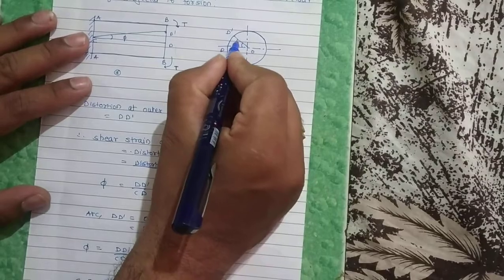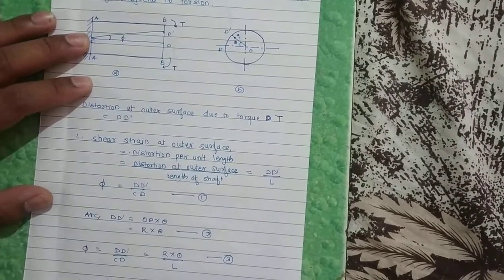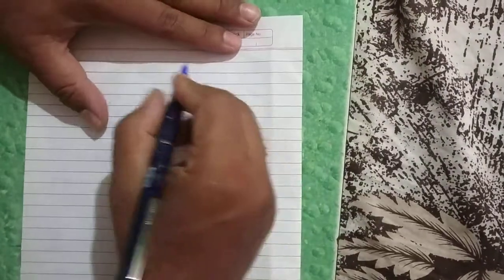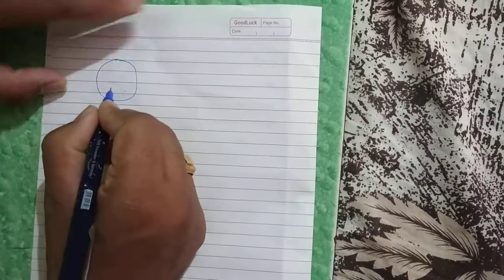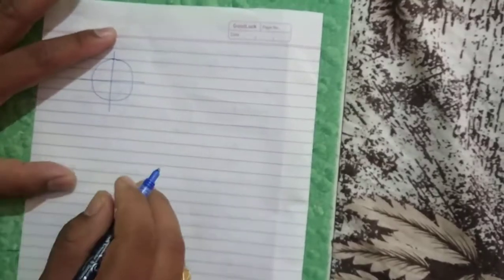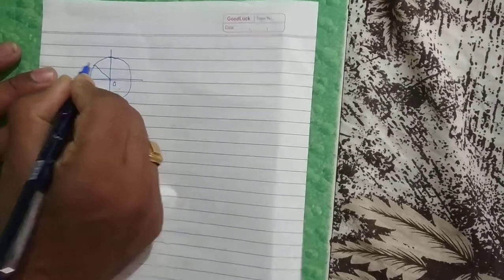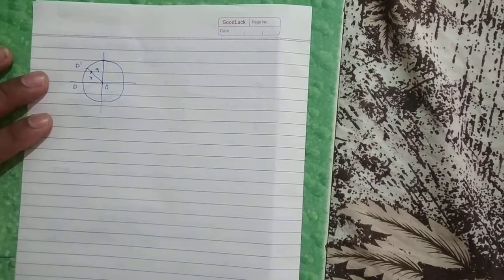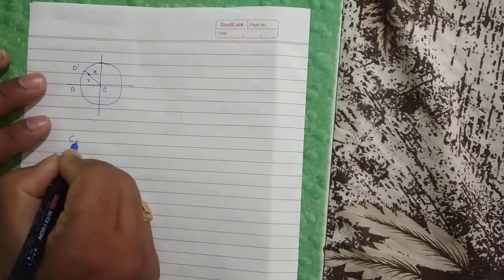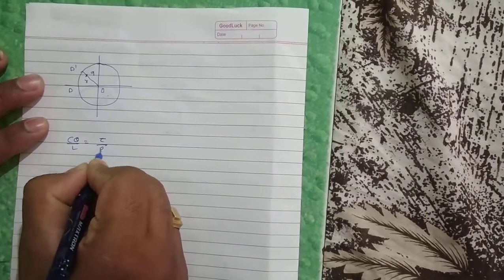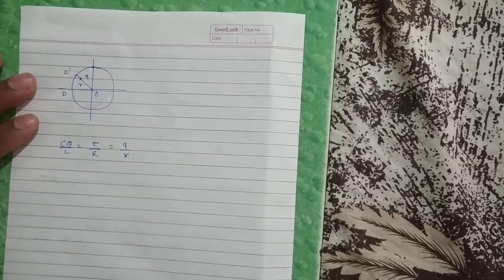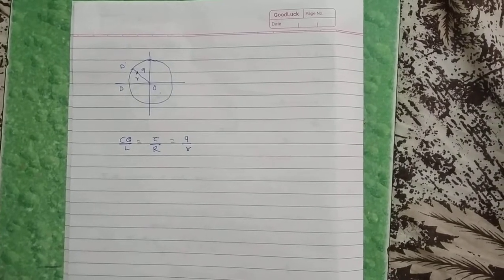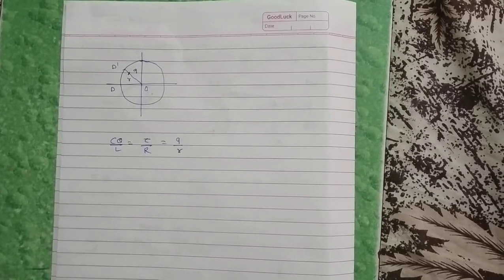In figure B, suppose there is a shear stress q at a distance of small r from the center. Equation 4 can be rewritten as: C·theta / L = tau / R = q / r, where q is the shear stress at any point at distance r. This is the shear stress variation equation for a circular shaft subjected to torsion.